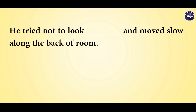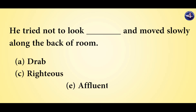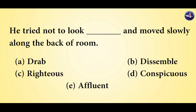He tried not to look dashed and moved slowly along the back of the room. The options are: drab, dissemble, righteous, conspicuous, affluent.